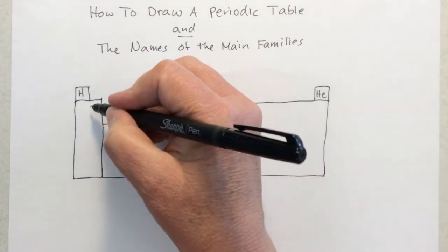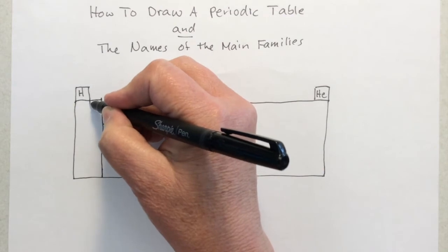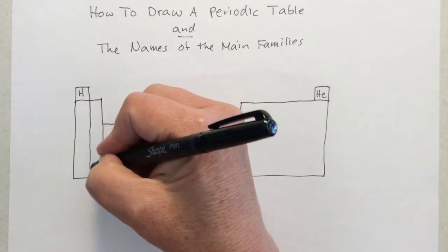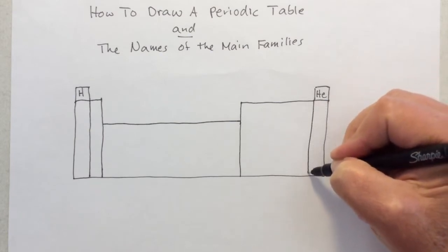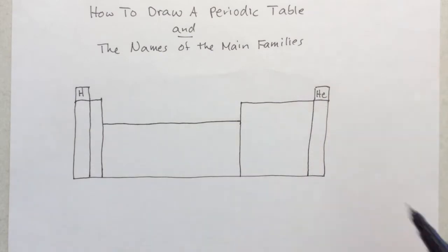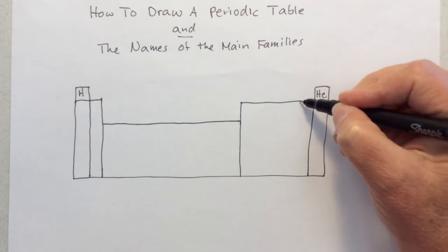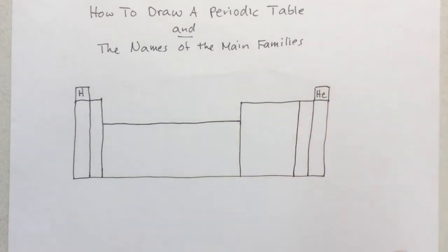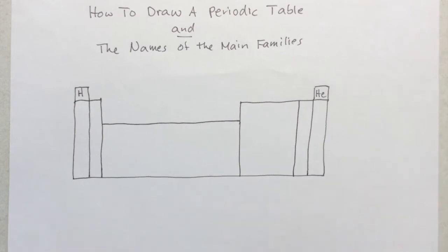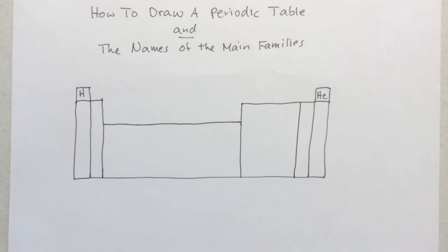Finally, for this top part, you want to draw a line down from the side of hydrogen and down from the side of helium. Then do one more line parallel down that line that you drew with helium. And there you've got the main families on this top part of the periodic table.